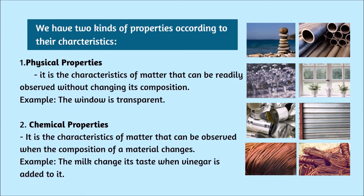We have two kinds of property according to their characteristics. The first one is physical properties — it is the characteristic of a matter that can be readily observed without changing its composition. Example: the window is transparent. The second one is chemical properties — it is the characteristic of a matter that can be observed when the composition of a material changes. Example: the milk changes its taste when vinegar is added to it.